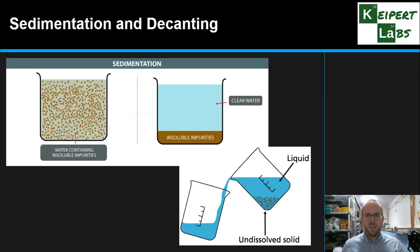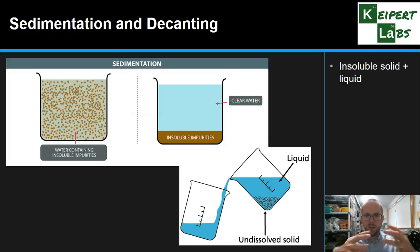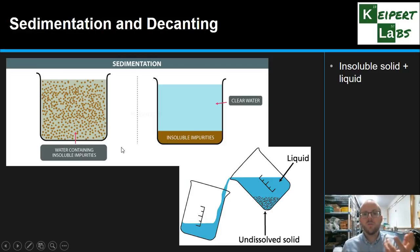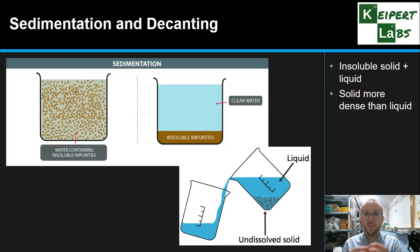Firstly, thinking about sedimentation and decanting — or decantation as it's sometimes called — it's a paired technique because they only really work together to effectively separate two things. In particular, we're talking about an insoluble solid and a liquid. Insoluble means it doesn't dissolve, so the solid might be suspended inside the liquid, floating amongst it, but eventually it settles out. The particles are either big enough or dense enough that over time these insoluble particles start to drop towards the bottom and form a settled layer.